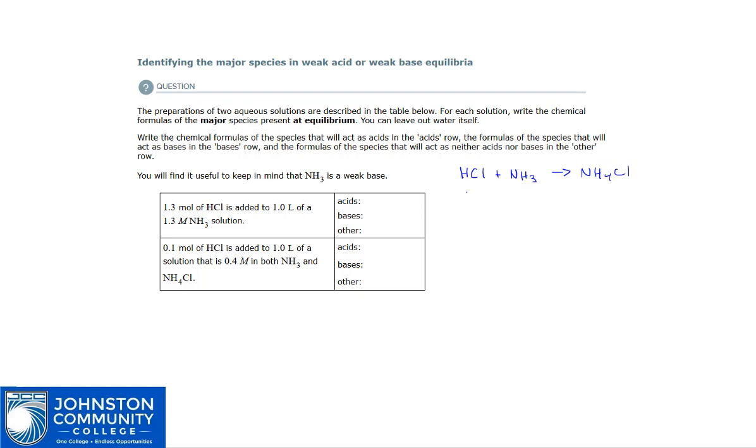In the first example here, we're told that we start with 1.3 moles of hydrochloric acid added to 1 liter of 1.3 molar ammonia. So 1.3 molar and 1 liter means that we also have 1.3 moles of the ammonia.